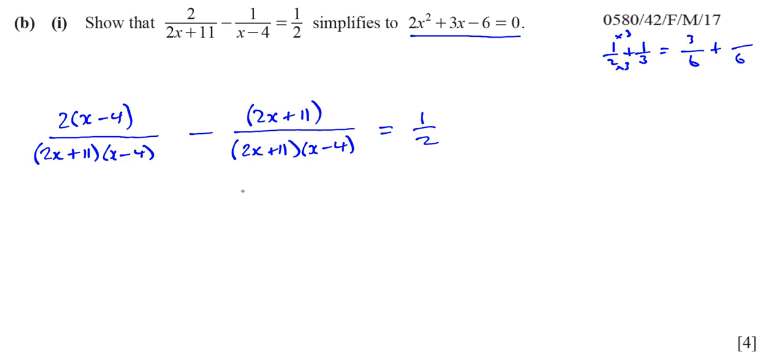So now I can actually write this as one fraction under one denominator, because they have the same denominator. Just like here, of course, 1 third will be 2 sixths. Then I can write this as, oh, this is like one denominator. Then I can add the numerators together. So the same thing I can do here. So I can say 2x plus 11 times x minus 4. And now, I can actually add this together.